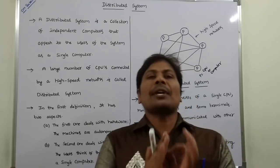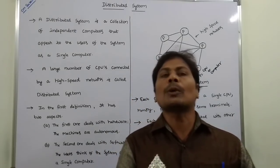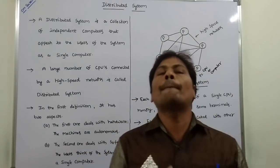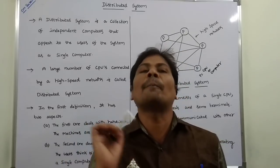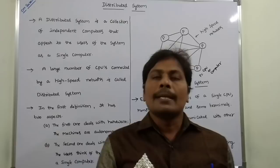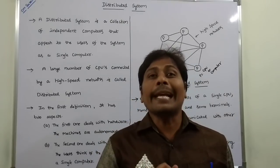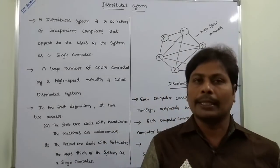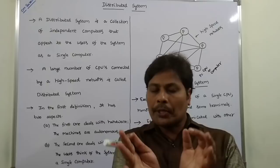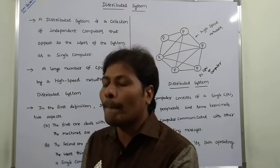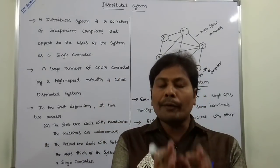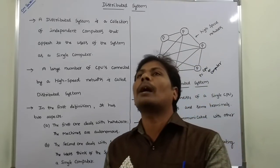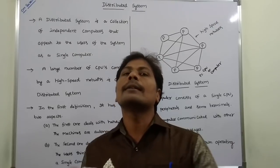Mainly, the definition of Distributed System contains two components. One is the hardware component and the second one is the software component. The hardware component is the collection of independent computers. The software component is that the users think of the system as a single computer. A Distributed System contains both hardware components and software components.